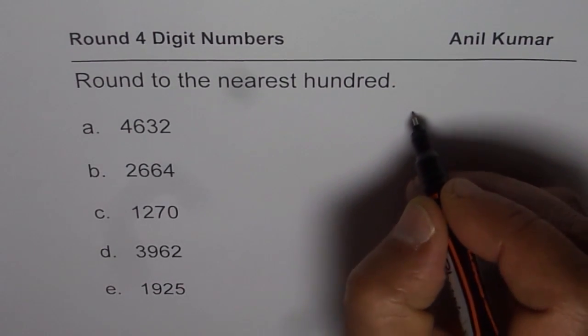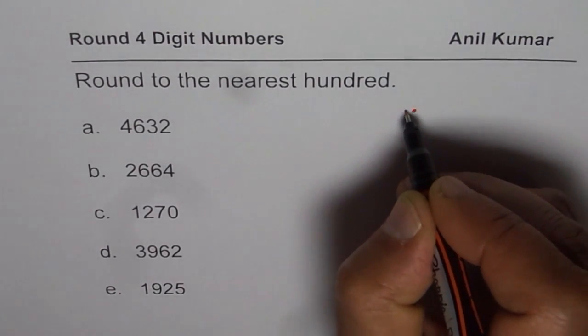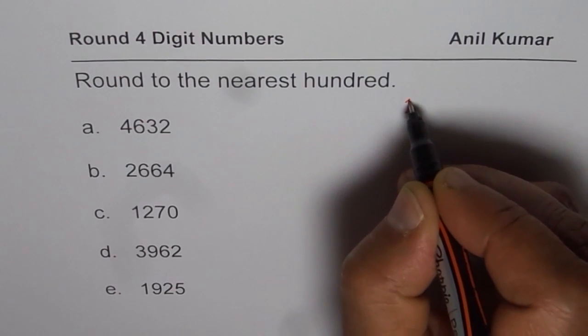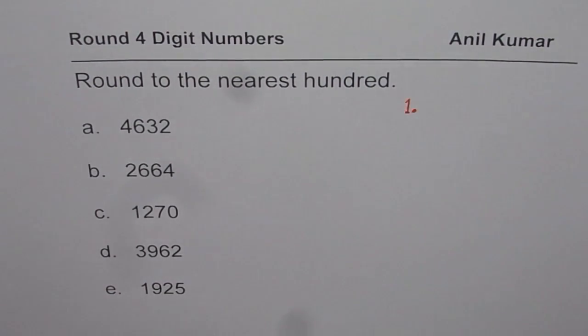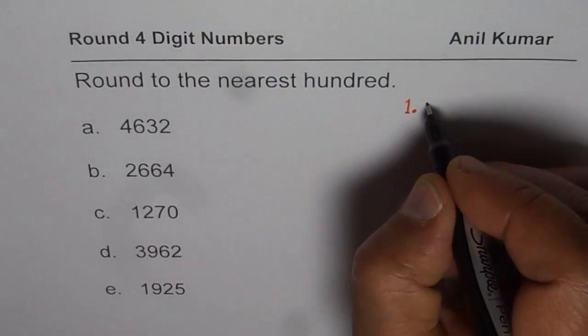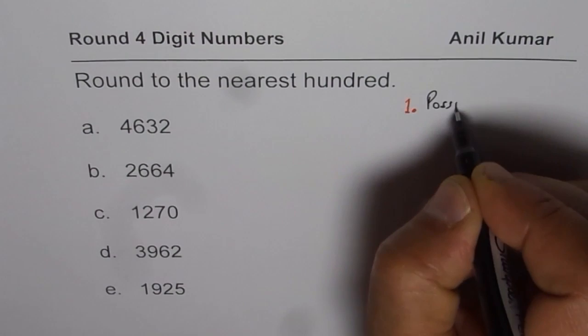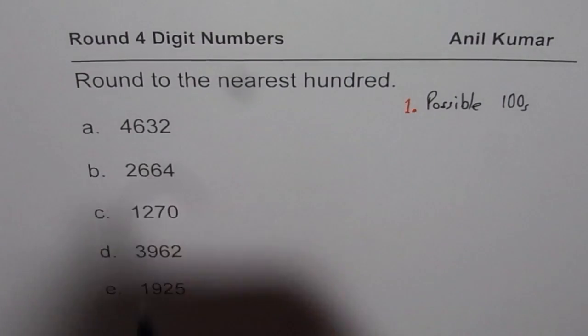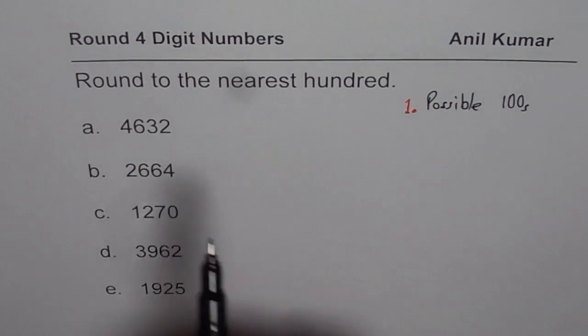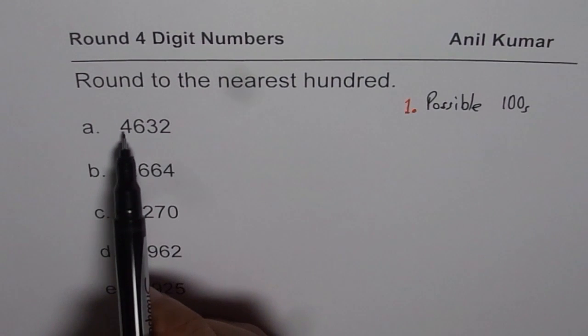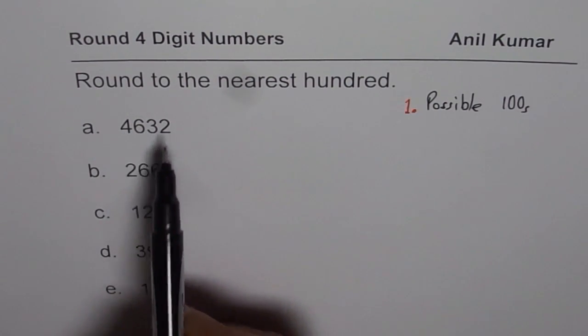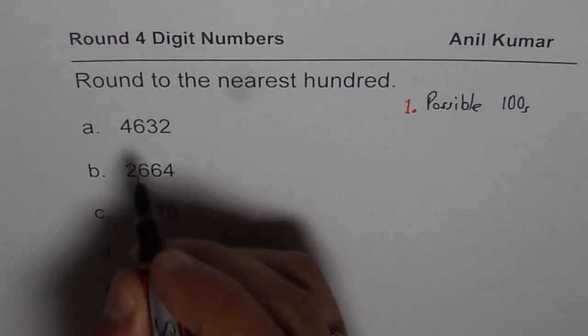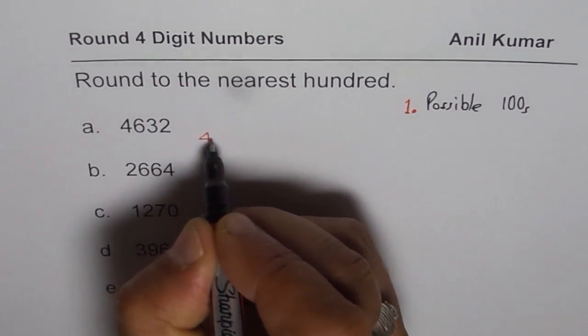I will show you two steps in which this should be done. Step number one is to find possible hundreds, or possible hundreds to which the number could be rounded. What I am trying to say here is the number is 4,632. So that could be rounded to 4,600.